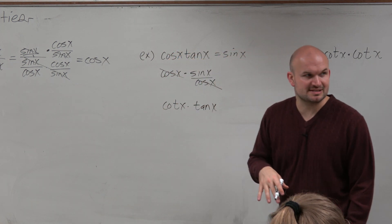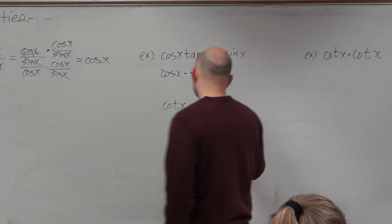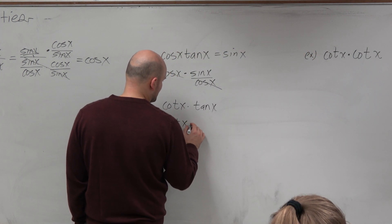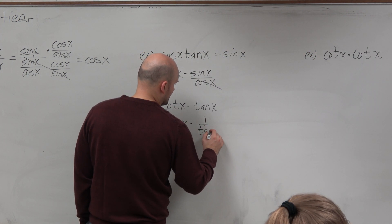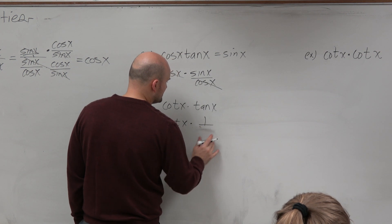Now you could rewrite these in terms of sines and cosines, but could you also just understand this as cotangent of x times 1 over cotangent of x?